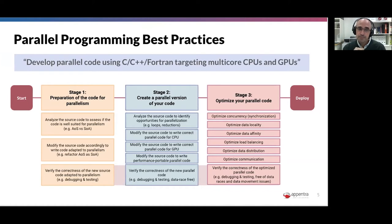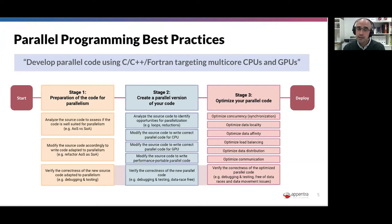Finally, stage three is about optimizing for performance. Your parallel code can be optimized in many different ways — data locality, load balancing, concurrency — and these are not mutually exclusive. In stage three, you decide which is the best optimization criteria for your application. It builds upon stage two, which provides a correct parallel code — often one that initially slows down — but it is the correct starting point.